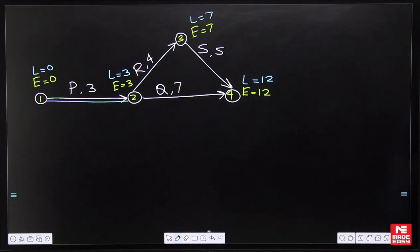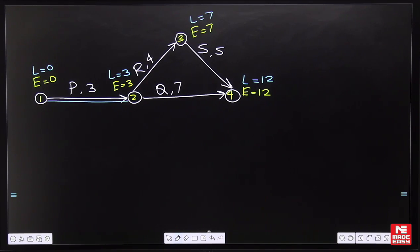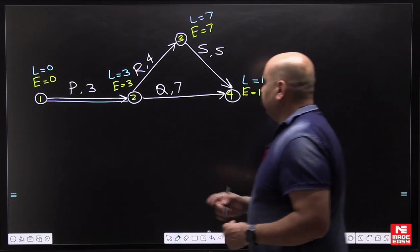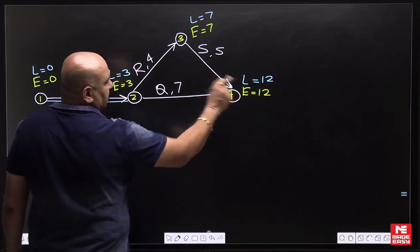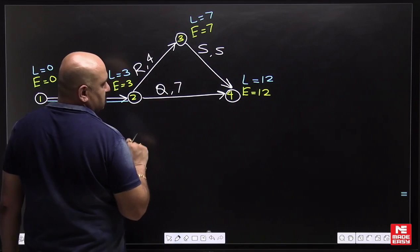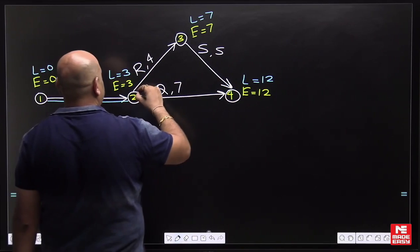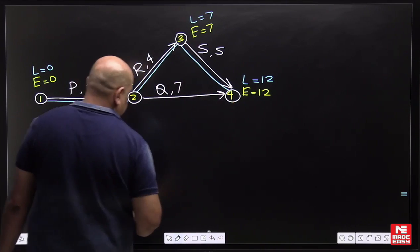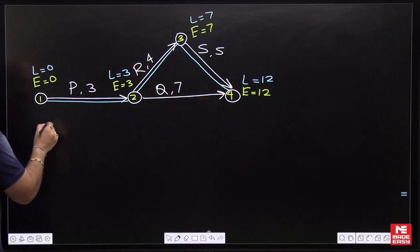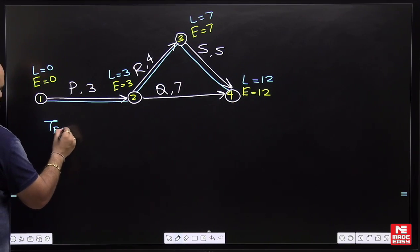For critical activities, three conditions are required: head event slack should be zero, tail event slack should be zero, and their difference should equal the activity duration. Activities satisfying all three conditions form the critical path. For activity 2→4, tail and head event slacks are equal but 12 minus 3 is not equal to 7, so it is non-critical. The critical path is determined accordingly.